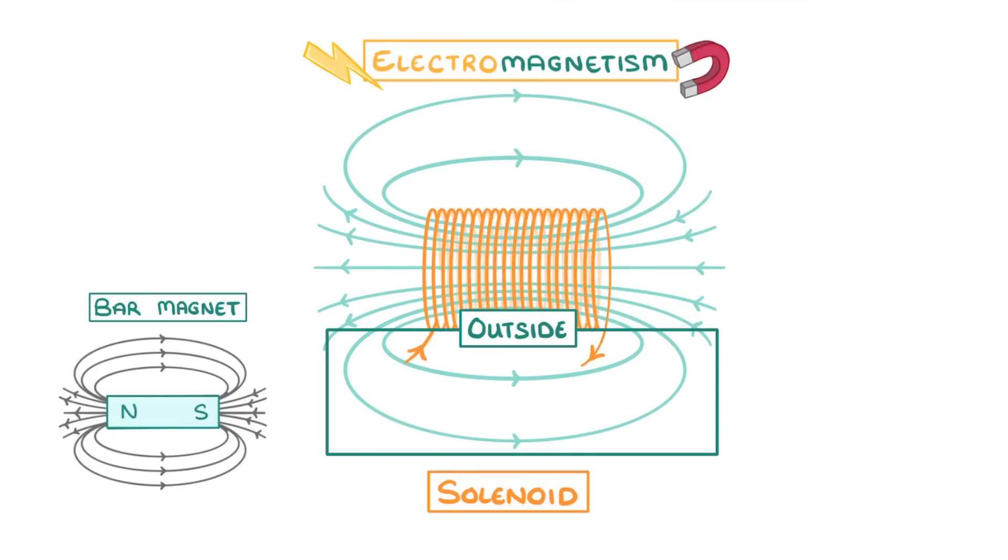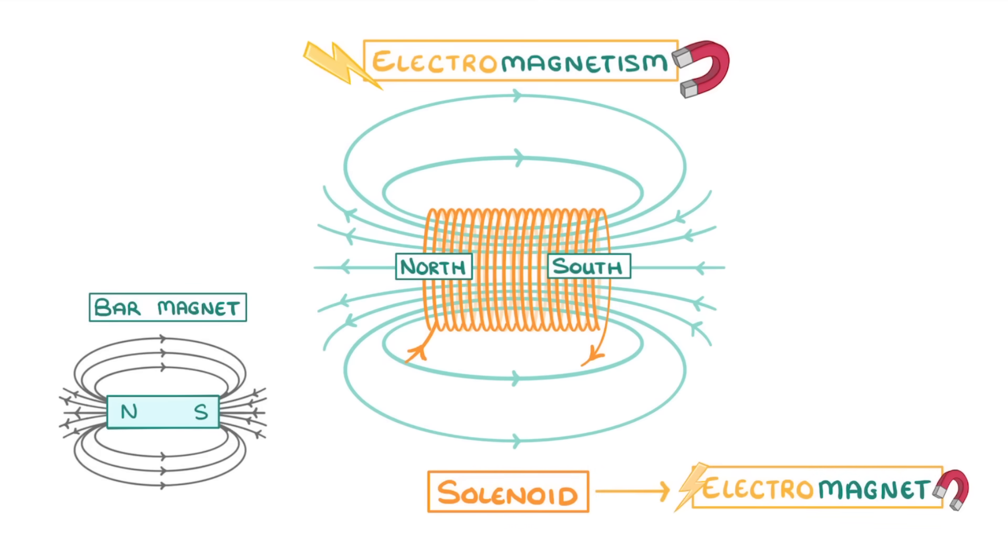And just like a bar magnet, where the field lines come out is the north pole, and where they point in is the south pole. So we've effectively used electricity to create a magnet, and so we call it an electromagnet.